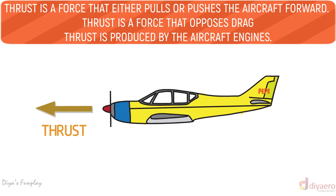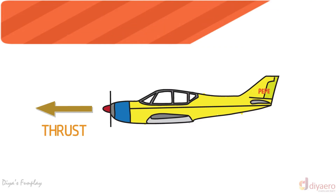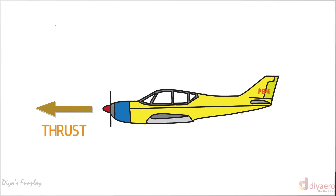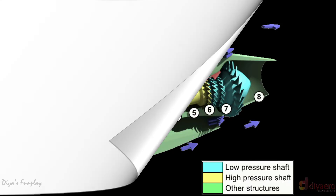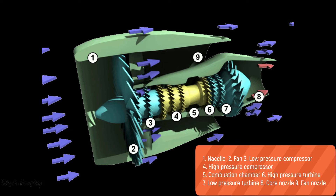Thrust acts through the propeller shaft or the centerline of a jet engine. A piston engine needs a propeller to convert the power output of the engine into thrust. Power is generated by the piston engine and transmitted through a shaft to rotate the propeller. This turning effect of the propeller creates a pull or push force called thrust.